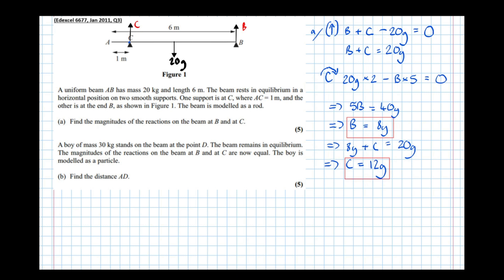So now we move on to part B. It says a boy of mass 30 kg stands on the beam at the point D. The beam remains in equilibrium. The magnitudes of the reactions on the beam at B and C are now equal. The boy is modeled as a particle. Find the distance AD. So it's a different situation and so requires a different diagram.